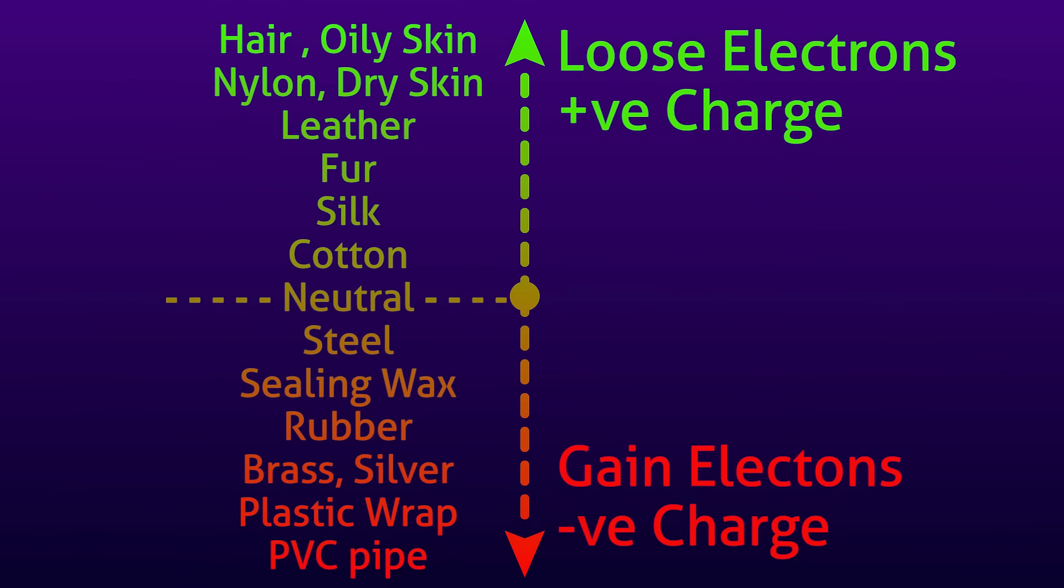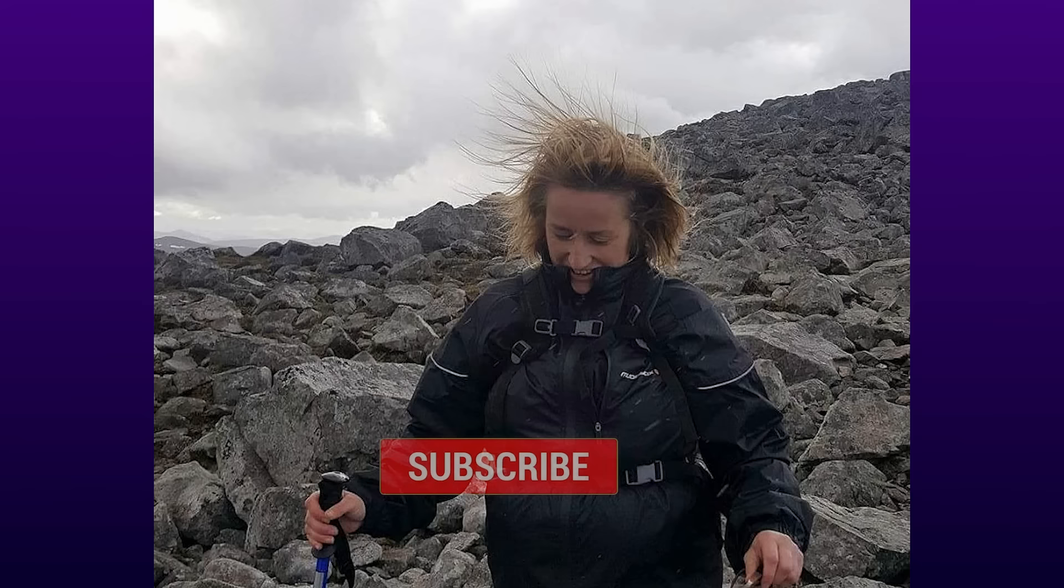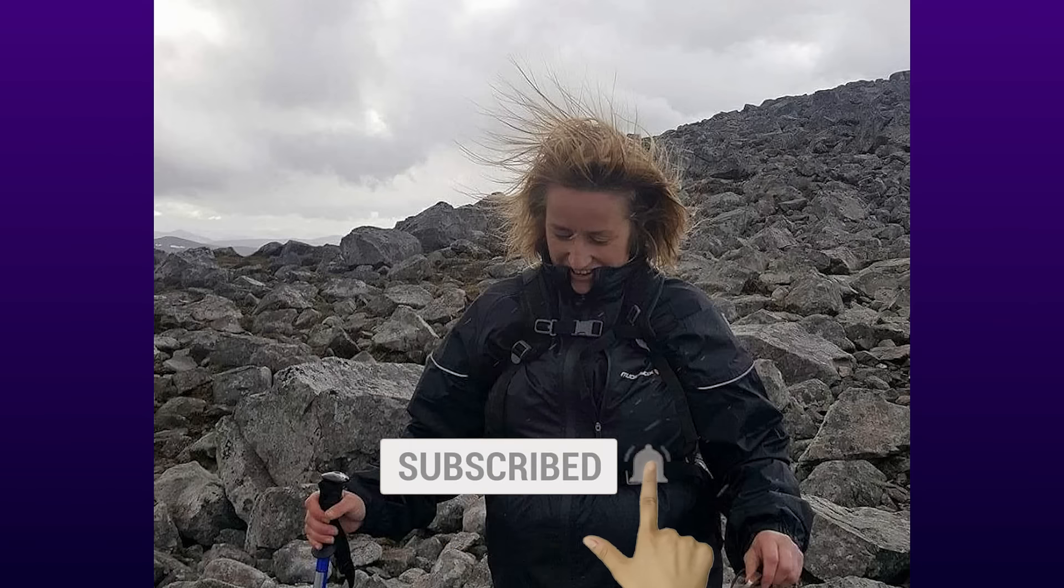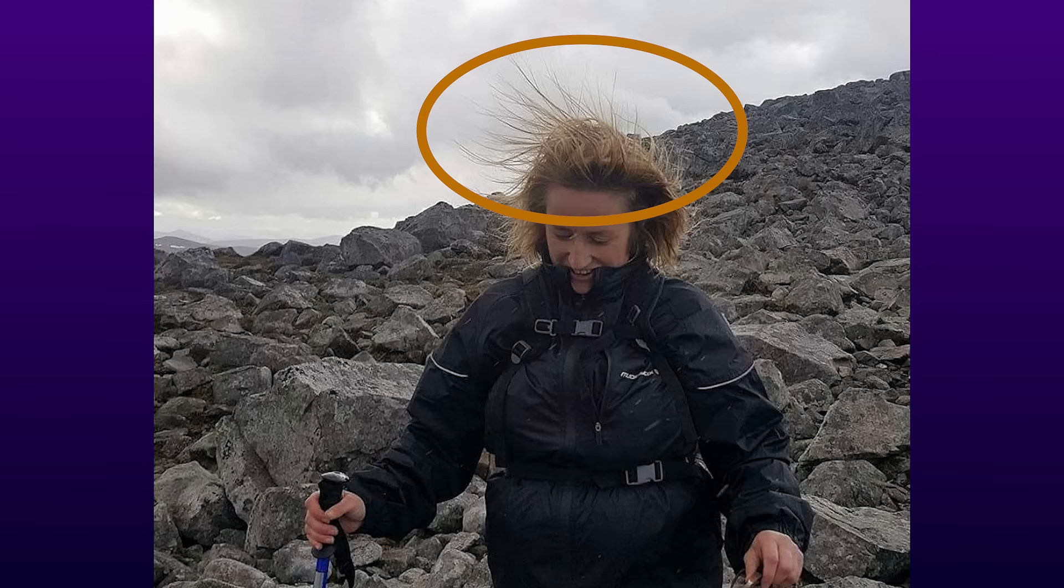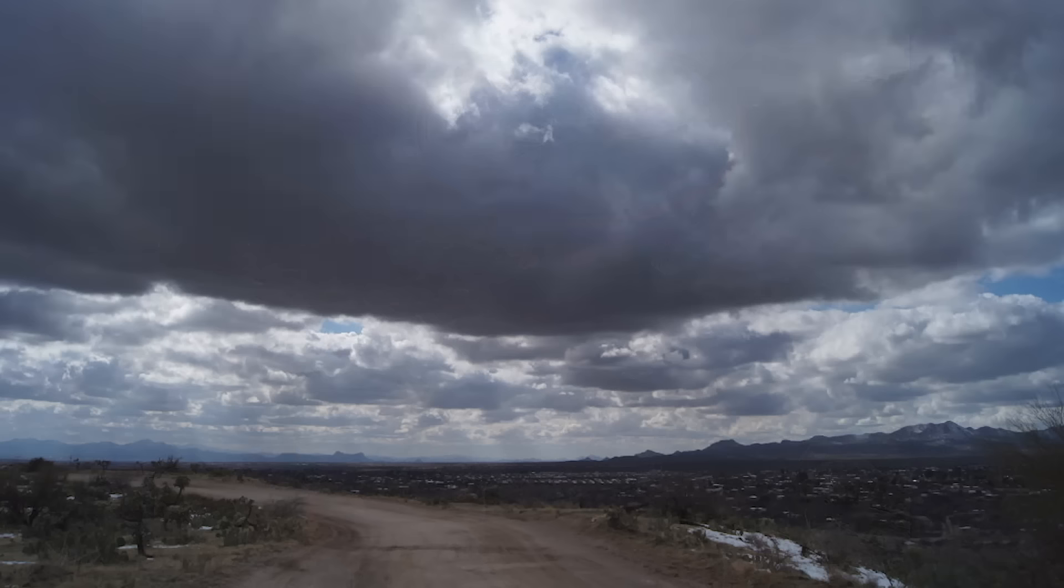Now, this property gives us meaningful indications also sometimes. For example, if you are out there under the cloudy sky and if you ever observe your hair pulled up like this, immediately look for cover. Because here the cloud surface on the top of your head has become negatively charged and it is attracting your hair and there is every chance of a heavy lightning. So, look for cover and be safe.